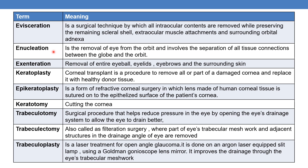The next term is enucleation. Enucleation is the removal of the eye from the orbit and involves the separation of all tissue connections between the globe and the orbital. Whereas exenteration is the removal of the entire eyeball, eyelids, eyebrows, and the surrounding skin.